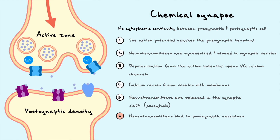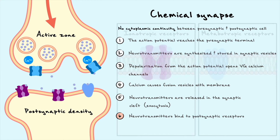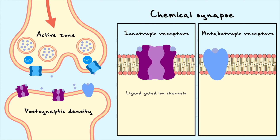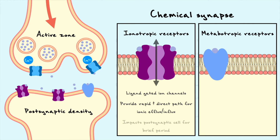As neurotransmitters diffuse in the cleft, they bind to receptors on the postsynaptic cell located in a region called the postsynaptic density. There are two main types of receptors: ionotropic and metabotropic. Ionotropic receptors are ligand-gated ion channels; when they open, ions flow in or out depending on their driving force, either depolarizing or hyperpolarizing the membrane potential of the postsynaptic cell. These channels provide a rapid direct path for ionic flux, with effects that typically last only a brief period.